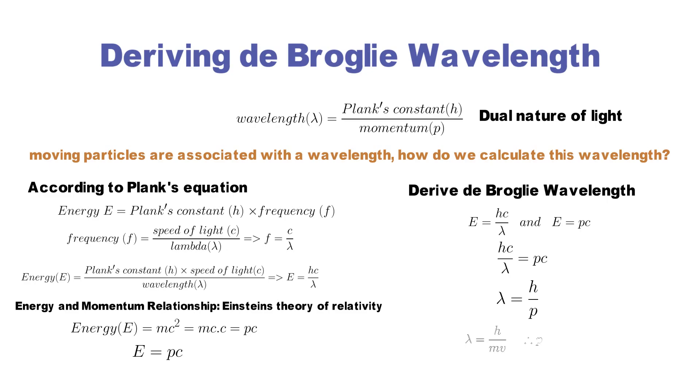For any particle with mass m moving at velocity v, its momentum is p equals mv. Substituting this into de Broglie's equation, we can find the wavelength of any moving particle.